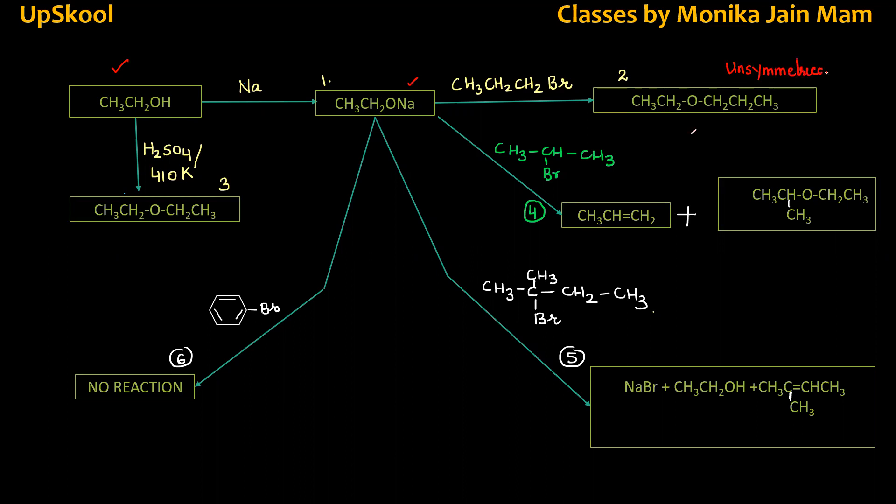On the other hand, if you add sulfuric acid at what temperature? Just check, 410 Kelvin. So ethanol will be converted into symmetrical ether. So there is difference in these two. Unsymmetrical ether. This method will only make symmetrical ether, and this method makes both symmetrical and unsymmetrical.